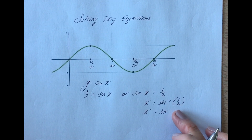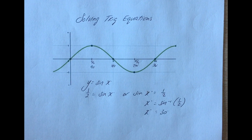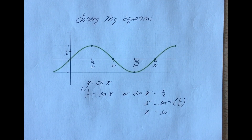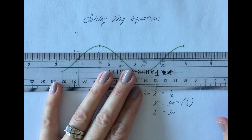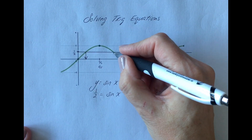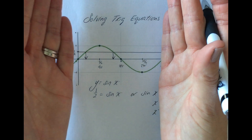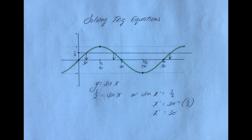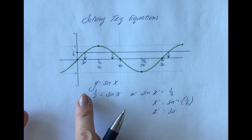That is what we would have done at junior cycle. Now at leaving cert, we understand from our familiarity with the trig graphs that if sine x equals a half, there's going to be more than one solution. If I draw a line across at where it's equal to a half, I can see there's a solution here, a solution here, and a solution here — and that continues on and on. Between 0 and 360 degrees, in the standard period, there are two solutions.